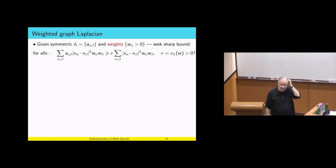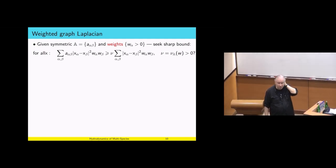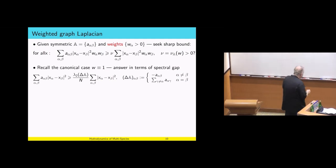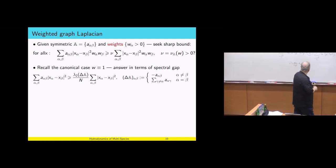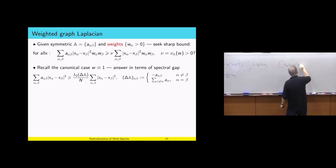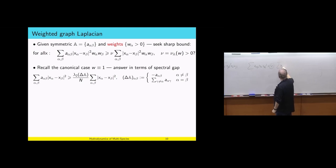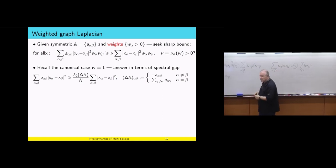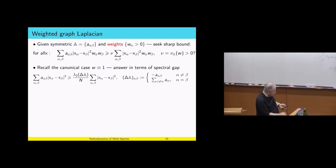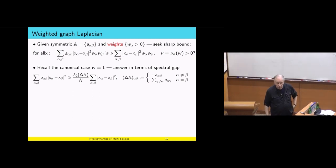What happens when all the weights are one? Suppose the weights are one, and you want to know when the sum of A alpha beta (X alpha minus X beta) squared is greater than the best constant times the sum of (X alpha minus X beta) squared. This is a fundamental question, not just in computer science. The answer: the best constant is the second eigenvalue of the Laplacian of the matrix A divided by N.